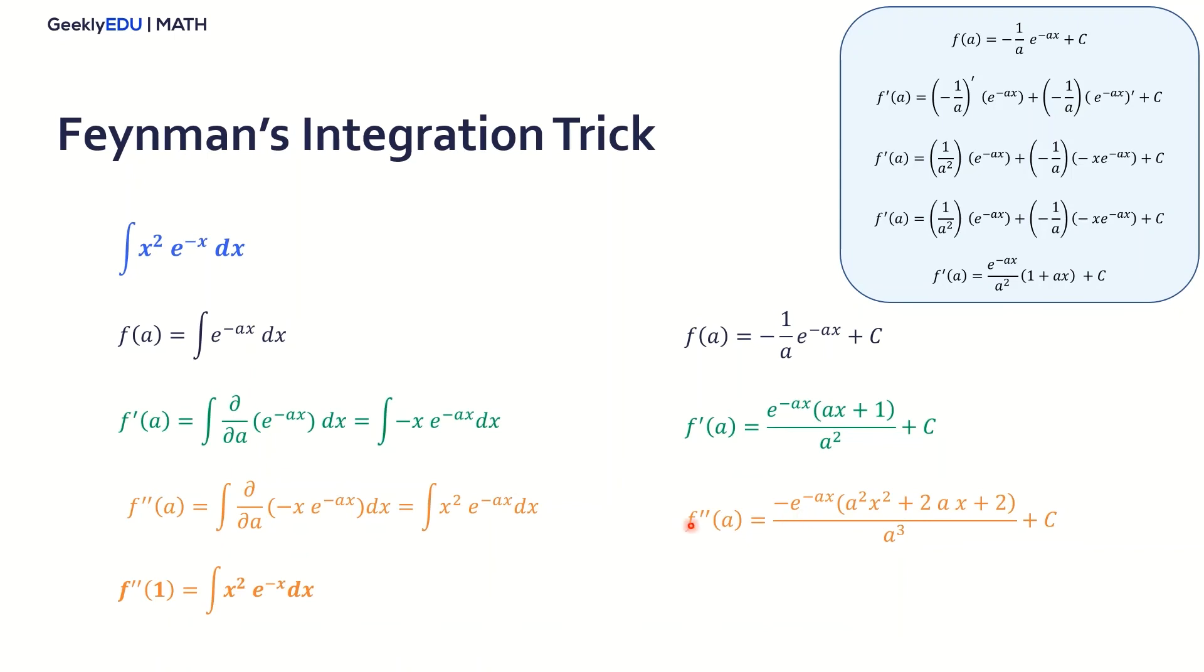Now remember that when a equals 1, we have our original integral. So I'm basically saying that when this function here, the second derivative equals 1, it will be exactly the value of our first integral. So we just solved our integral, because this integral here is the second derivative of our function of a when a equals 1.